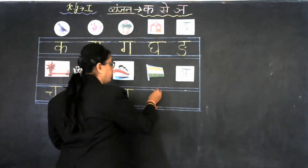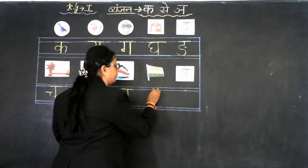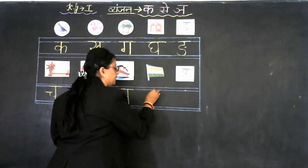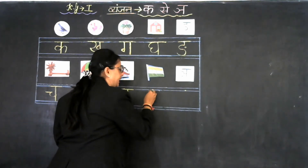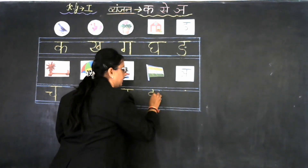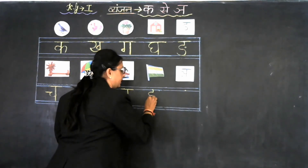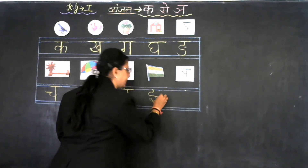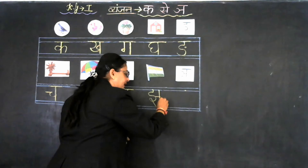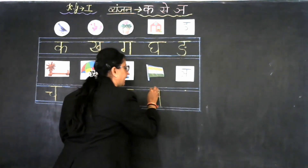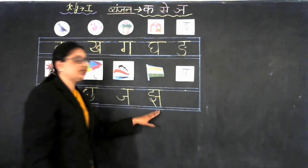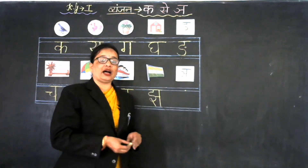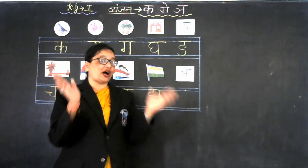Now our next Vyanjan is Jha. Jha se jhanda. And what is the formation of Jha? Now look at the board. We make a small standing line, then an omega shape like this, right curve then left curve, then small sliding line, then small sleeping line, and standing line and sleeping line on the top like this. Jha jhanda.